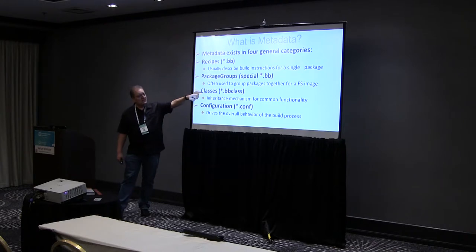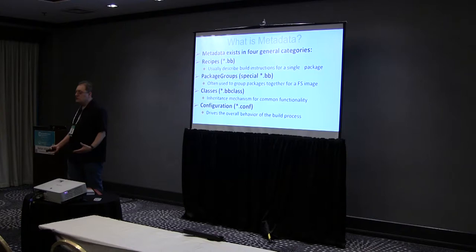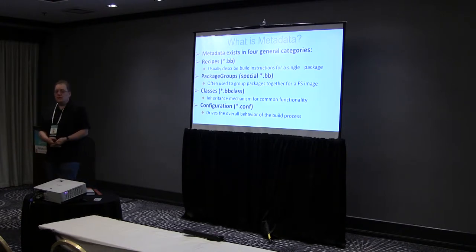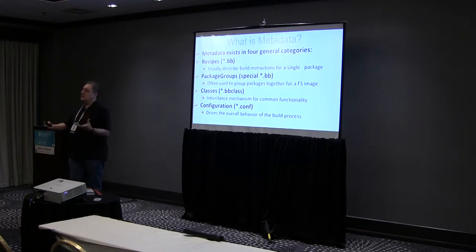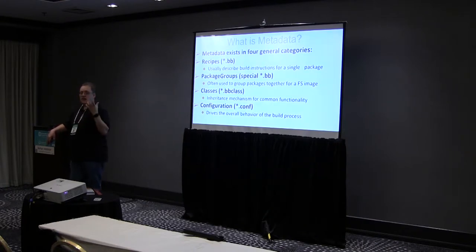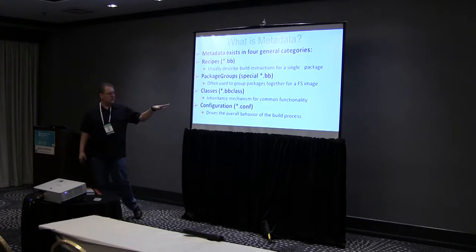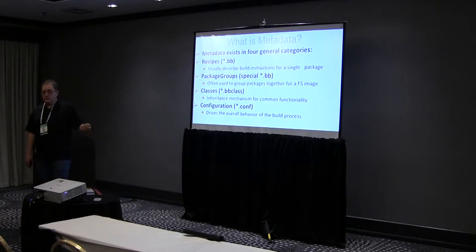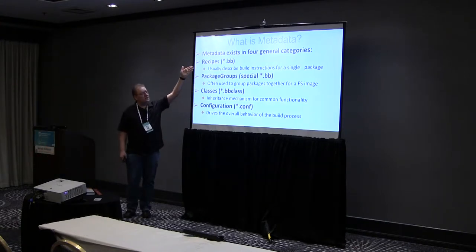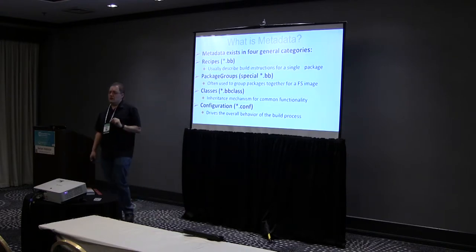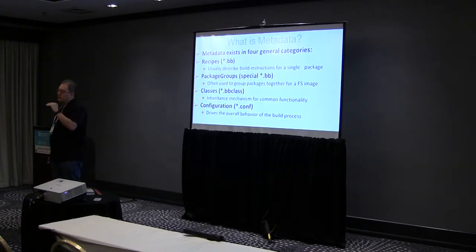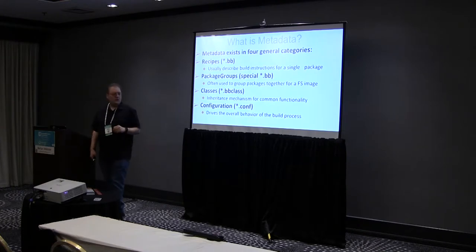The next metadata type is .bbclass — if it ends in .bbclass, this is a bit like a pure virtual object. Think of it as the parent class: it's the kind of thing that happens over and over as you're building a recipe. If it looks like an autotools thing, you inherit from the autotools bbclass and don't have to write that code again. Configuration files aren't recipes but are still metadata; they live in specific places. Recipes and package groups live in recipes directories; bbclasses live in directories called 'classes'; configuration files always live in a directory called 'conf.'